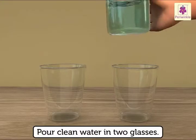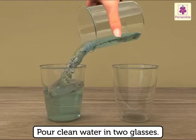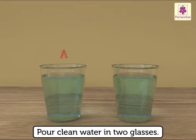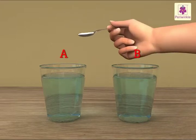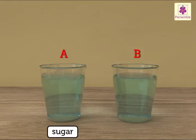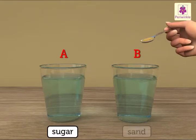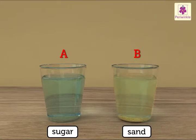Pour clean water in two glasses, A and B, keeping the level the same. Stir a teaspoon of sugar in glass A and a teaspoon of sand in glass B.